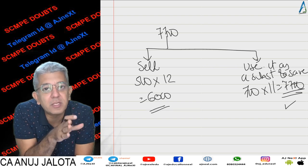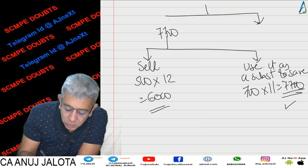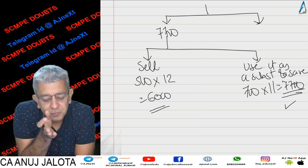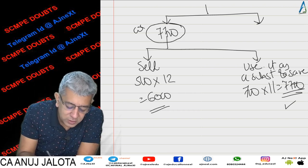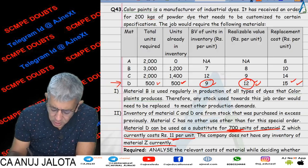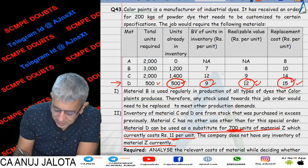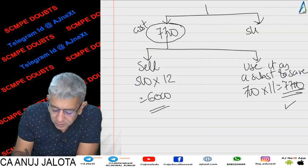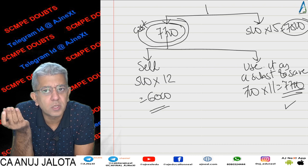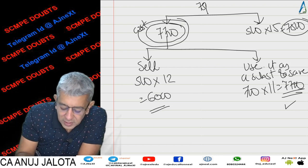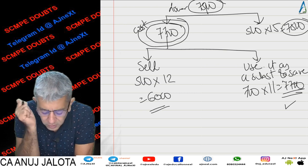So if the offer had not come, we would have used Material D in place of Material Z and saved ₹7,700. But now the offer has come — you have two options. Option one: use Material D for this special offer, in which case you will have to purchase Material Z, so ₹7,700 becomes your cost. Option two: directly purchase D from the market — 500 units at ₹15 = ₹7,500. Out of these costs, we incur whichever is lower, so the final answer is ₹7,500. ICAI has printed ₹7,700, but ICAI is completely wrong.